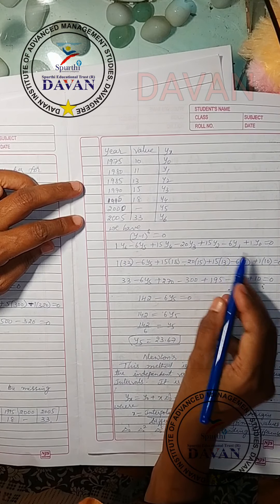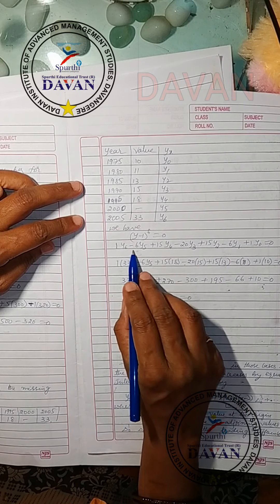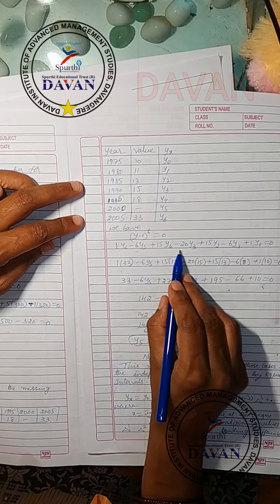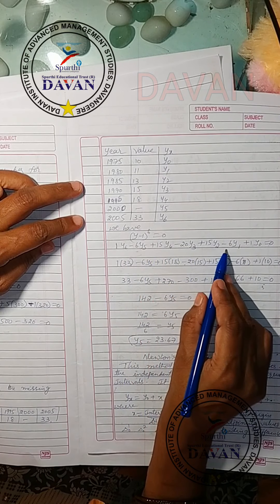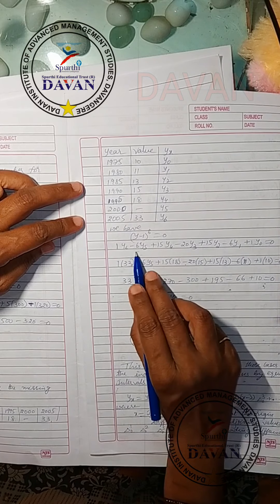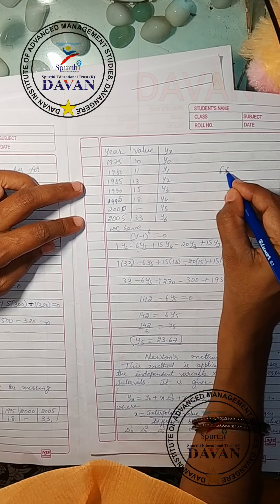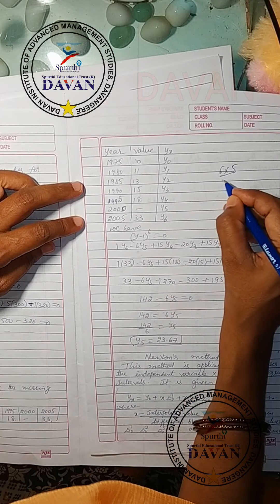Substitute the values for this equation and we get the corresponding values. Here it is (y minus 1) to the power of 6 equals 0.